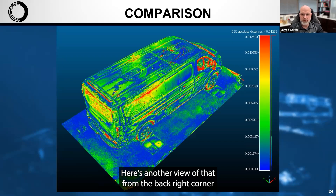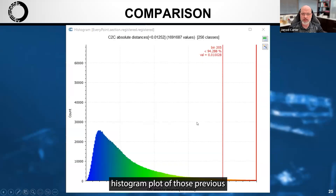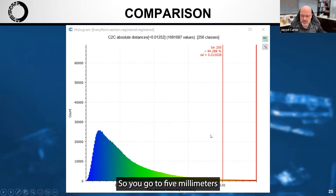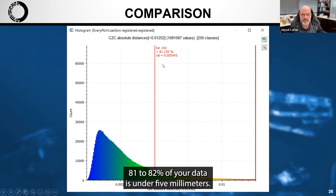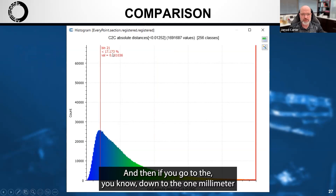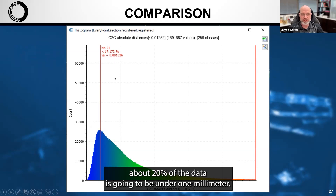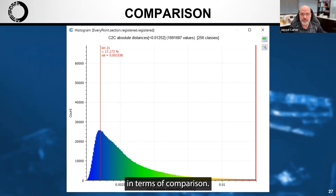Here's another view from the back right corner. To put additional meat on the bone, a histogram plot of those visualizations shows that 95% of the data in the overlays is under one centimeter. At five millimeters, 81 to 82% of your data is under that threshold. Down at one millimeter, about 20% of the data falls under that mark. Overall, I'd say that's all pretty good in terms of comparison.